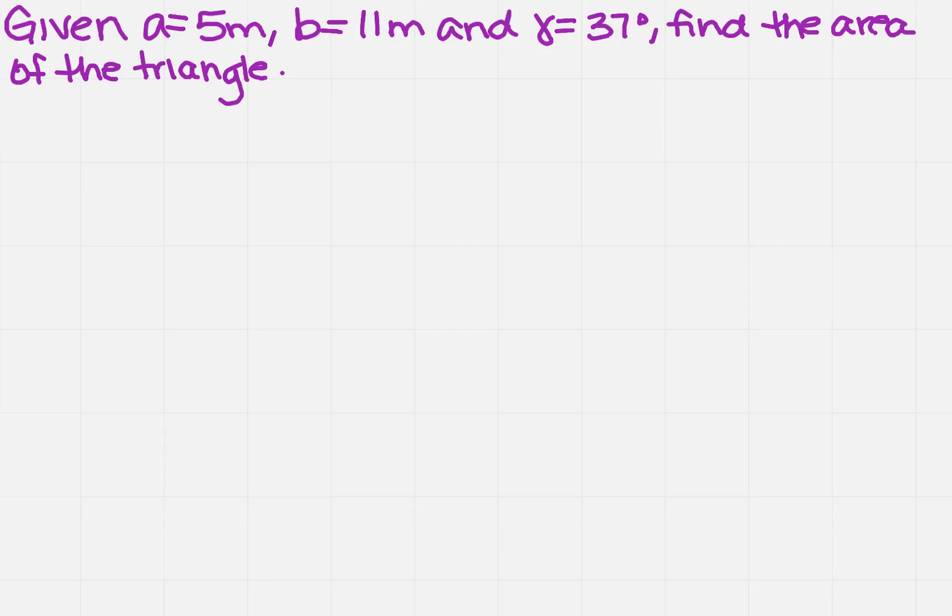A equals 5 meters, B equals 11 meters, and gamma equals 37 degrees. Find the area of the triangle.